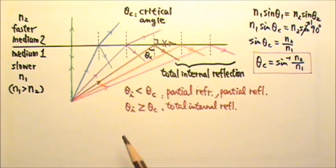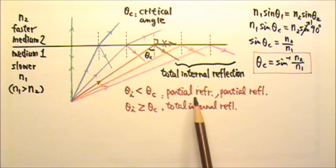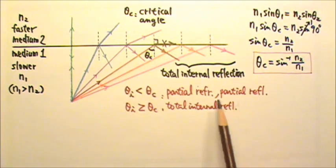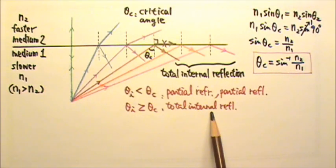To summarize, when the angle of incidence is less than the critical angle, we have partial refraction and partial reflection. When the angle of incidence is equal to or greater than the critical angle, we have total internal reflection. No part of the light gets through to the second medium.